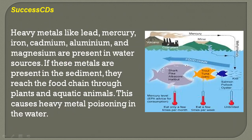Heavy metals like lead, mercury, iron, cadmium, aluminium and magnesium are present in water sources. If these metals are present in the sediment, they reach the food chain through plants and aquatic animals. This causes heavy metal poisoning in the water.